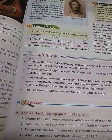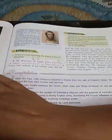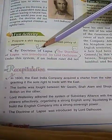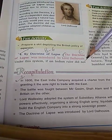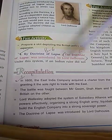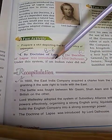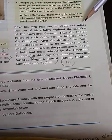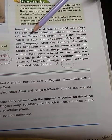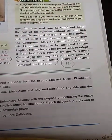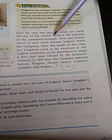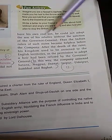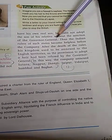The fourth method is the Doctrine of Lapse — a very important topic. A likely exam question: what was the Doctrine of Lapse, and by whom was it introduced? It was introduced by Lord Dalhousie. Under this system, if an Indian ruler did not have his own real son, he could not adopt the son of a relative without the sanction of the Governor General.